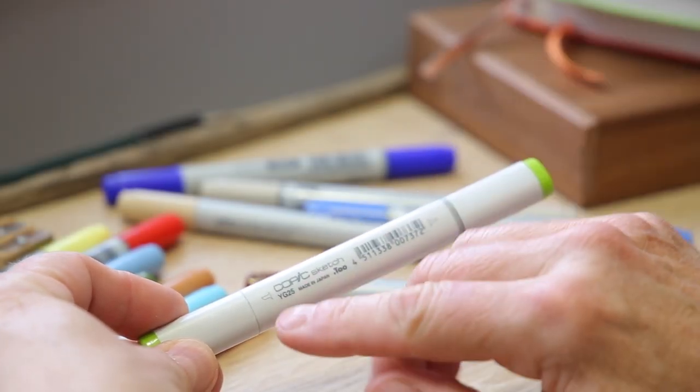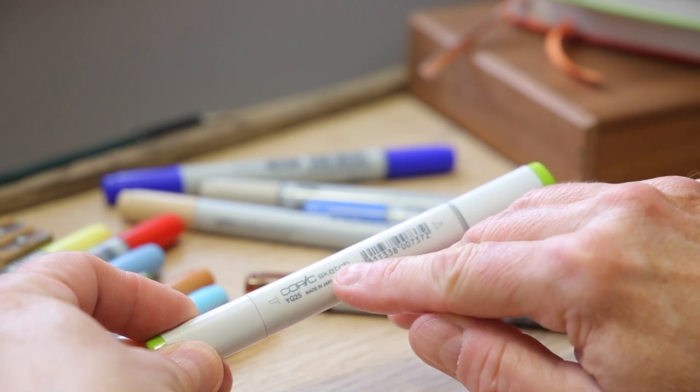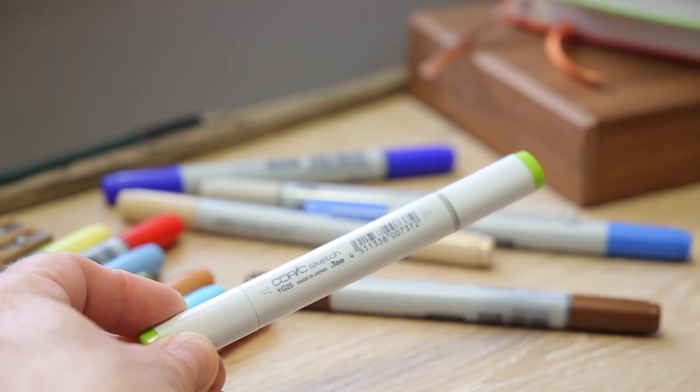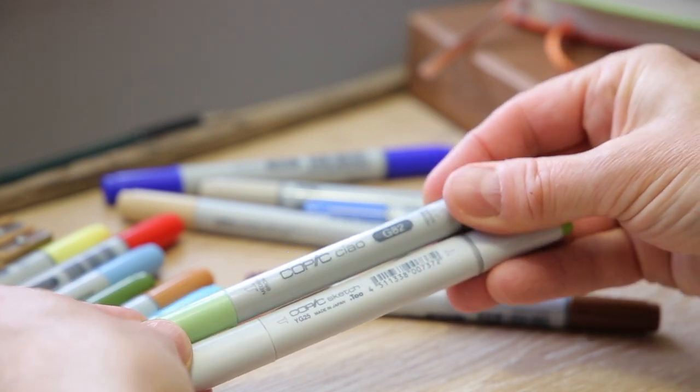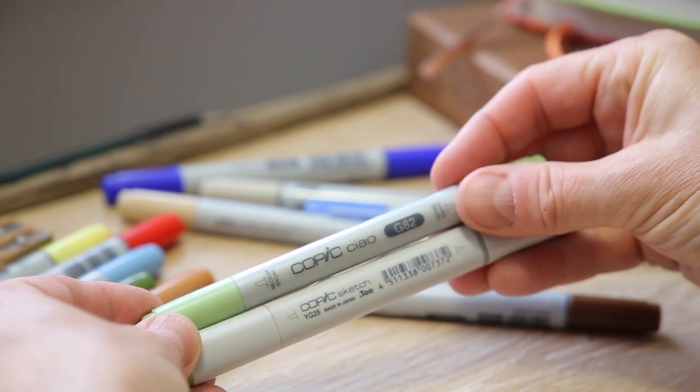Copic markers come in two specific flavors. Sketch, the Pro level pen. And then there's Ciao which is slightly more basic, i.e. a round body and less ink, which is considerably cheaper.